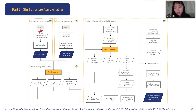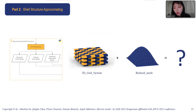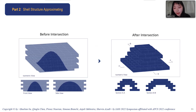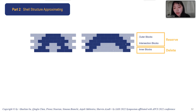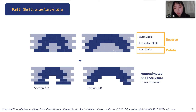Part three approximates the shell structure using the predefined 3D grid system and shell shape. Through an intersection algorithm, blocks intersected with the shell shape are selected. The blocks are then divided into three layers: outer blocks, intersected blocks, and inner blocks. To ensure a smooth surface for the next layer's construction, outer and intersected blocks are reserved while inner blocks are removed. This results in an approximated shell structure at a low resolution.